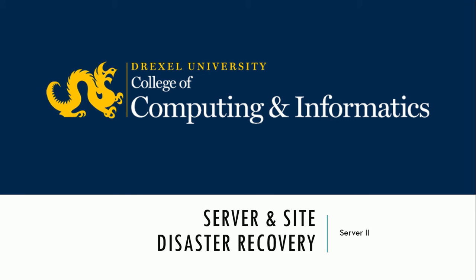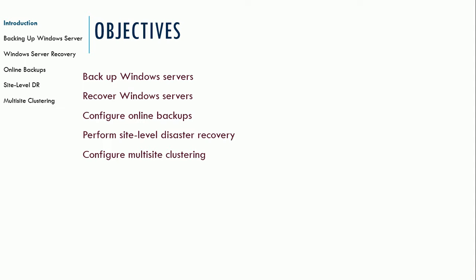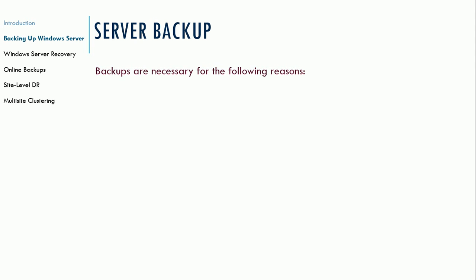At this point, we've talked about all of these interesting features with Microsoft's Windows Server, all these different roles and how they can serve the organization. Now that we have all this stuff running, we have to make sure that we have disaster recovery and backup in the event of a catastrophe. In this unit, we're going to talk about how to do those backups and how to go through the recovery steps. There are new options available for online backups using Microsoft Azure, site-level disaster recovery, and configuring multi-site clustering. Let's get started talking about server backups.